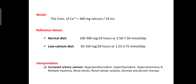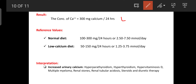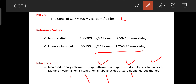Result: the concentration of calcium in urine is 300 mg calcium per 24 hours. The reference value for a normal diet is 100–300 mg per 24 hours; for a low calcium diet, it is 50–150 mg. Comparing with our result, this is normal. Interpretation: increased urine calcium indicates hyperparathyroidism, hyperthyroidism, hypervitaminosis D, multiple myeloma, renal stones, renal tubular acidosis, or use of steroids and diuretic therapy. In this experiment the result is normal, indicating the sample has a normal rate of calcium excretion through urine.